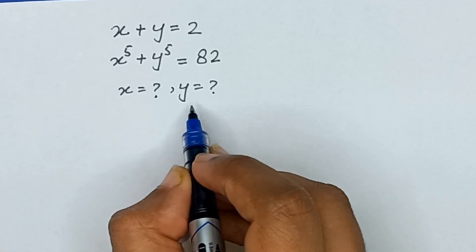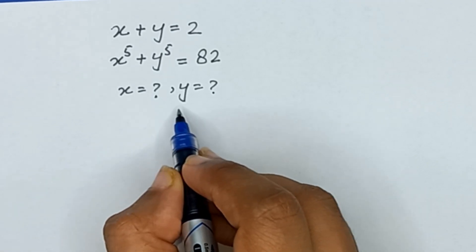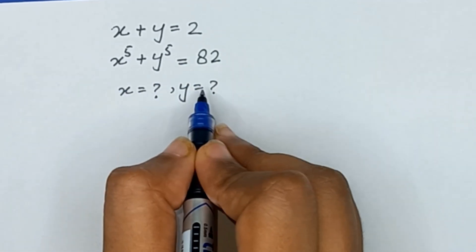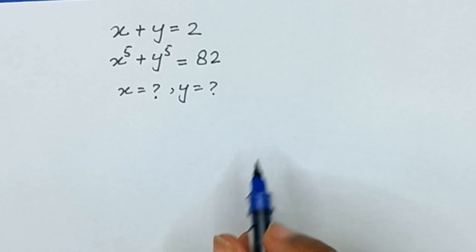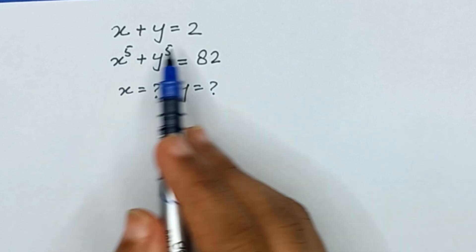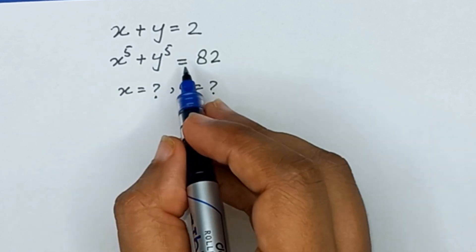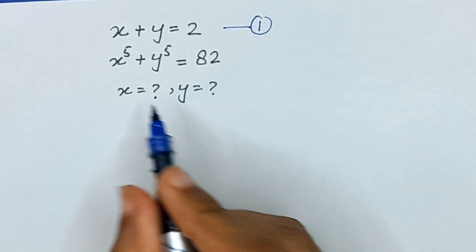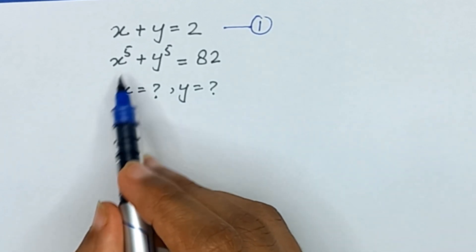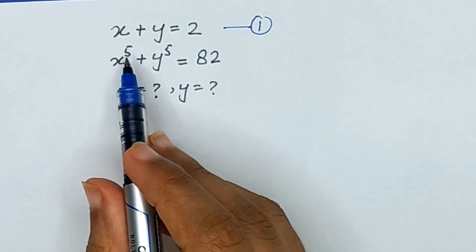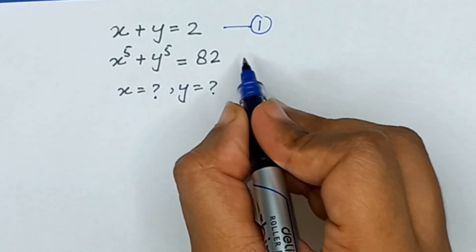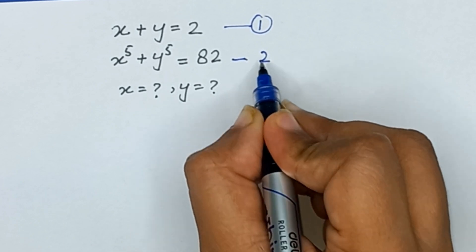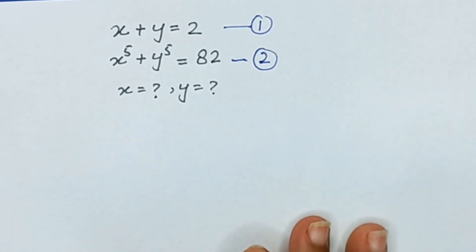Here we will find the value of x and the value of y from these two equations. We have x plus y is equal to 2, which we will name equation number 1. And equation number 2 is x raised to the power 5 plus y raised to the power 5 is equal to 82.